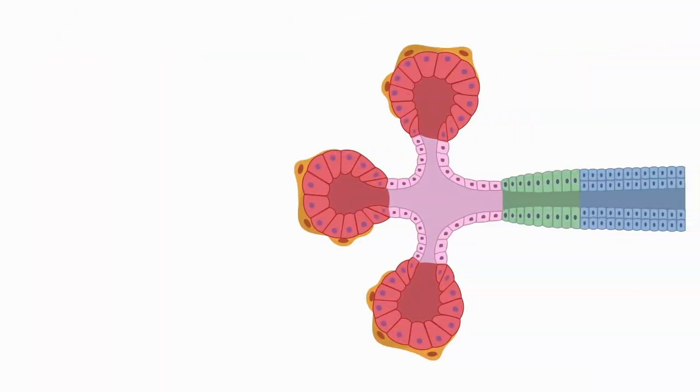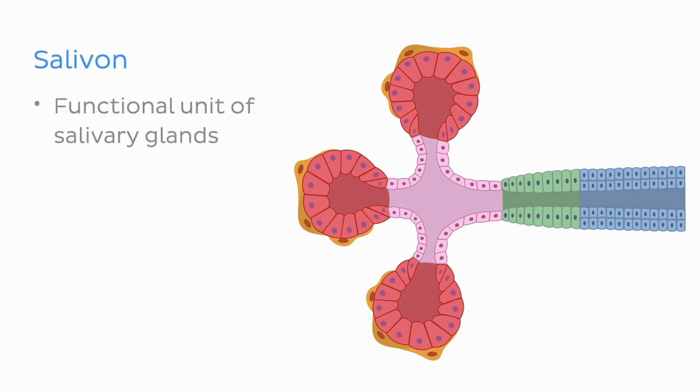Now let's take a closer look at what we'll find in these lobules. Essentially, all elements you'll see here are parts of the salivon — the functional unit of salivary glands.